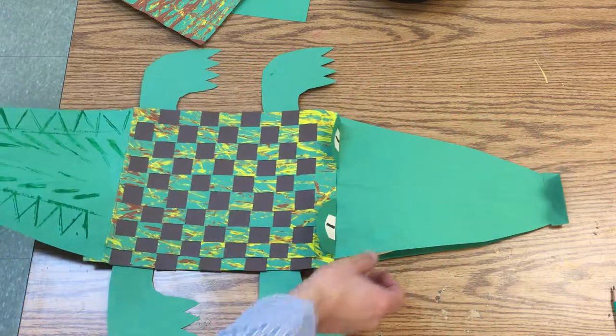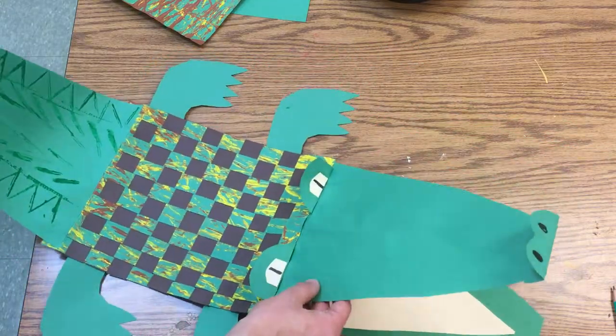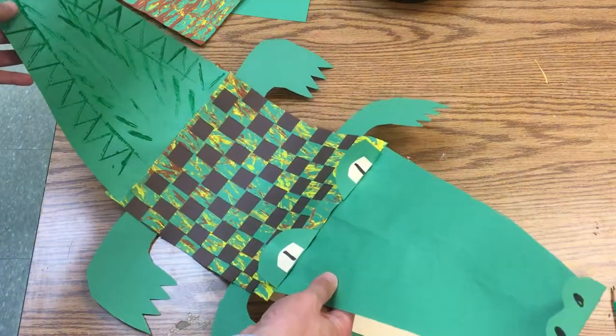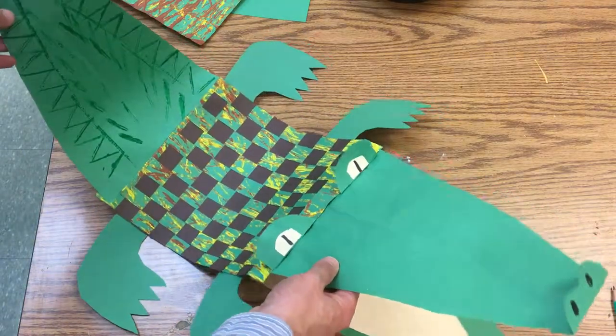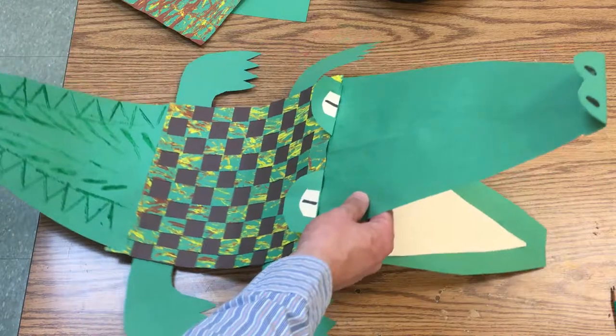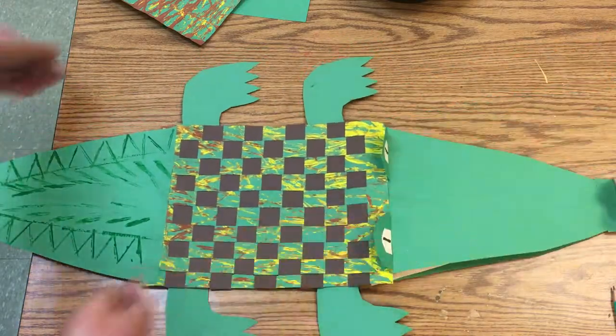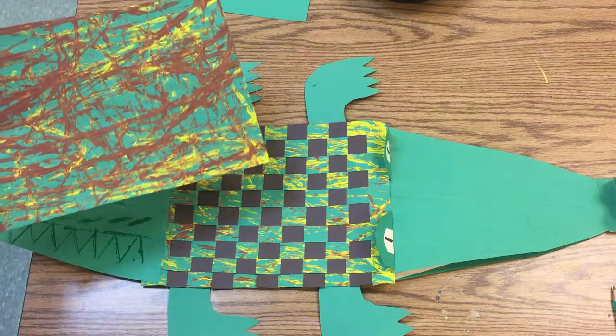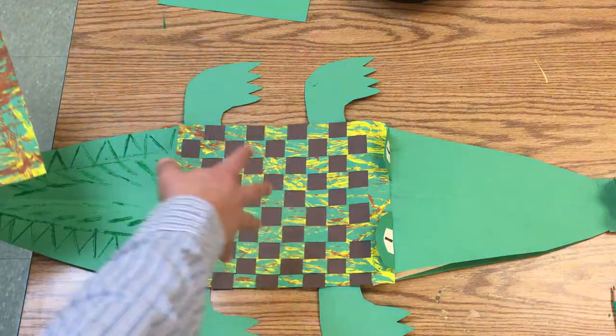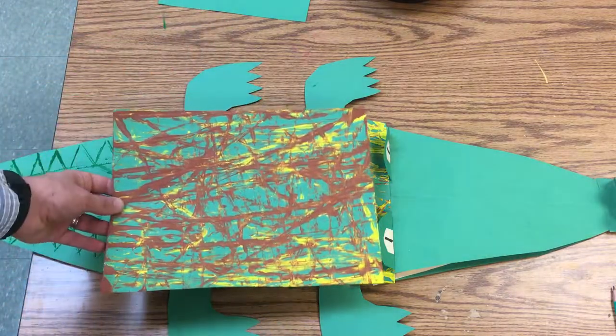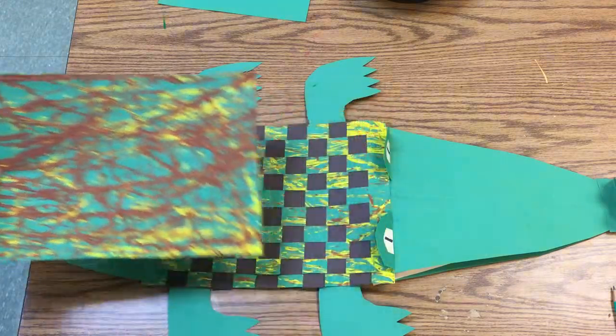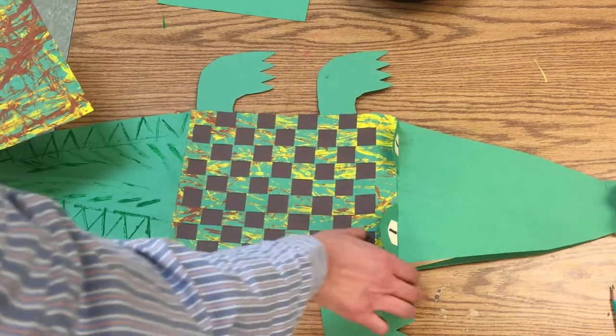We're gonna make this crocodile puppet with lots of different art techniques: painting, printing, weaving, cutting, and gluing. The first thing we're gonna work on today is this painted part that we'll eventually weave things into to make a really cool textured back. We're actually gonna paint this with marbles, so I'm gonna move this aside so it doesn't get messy.